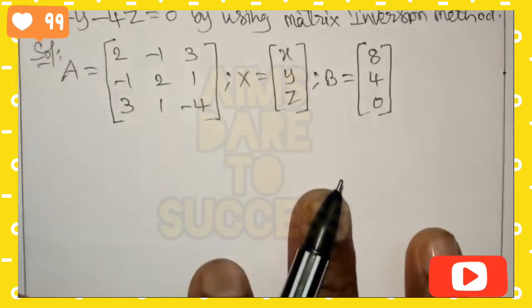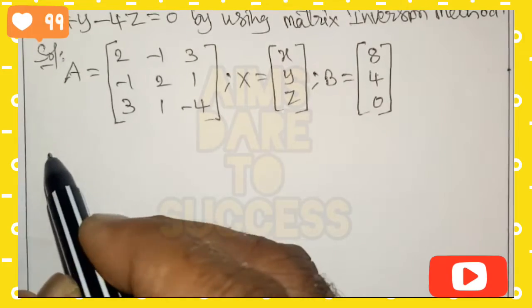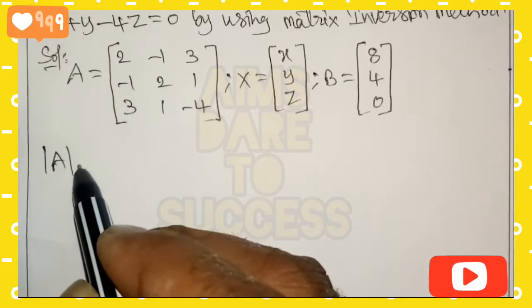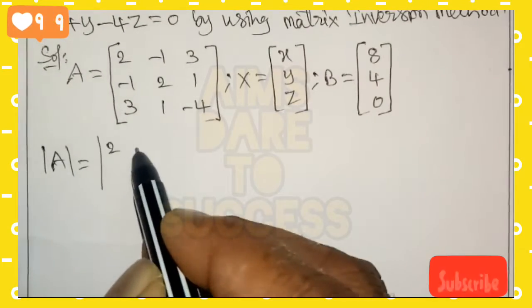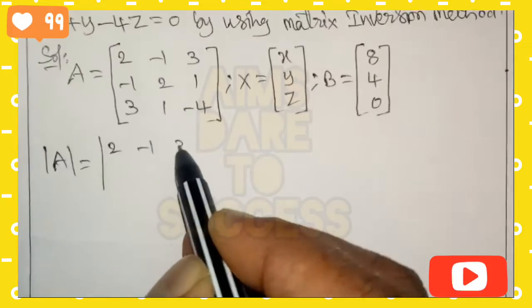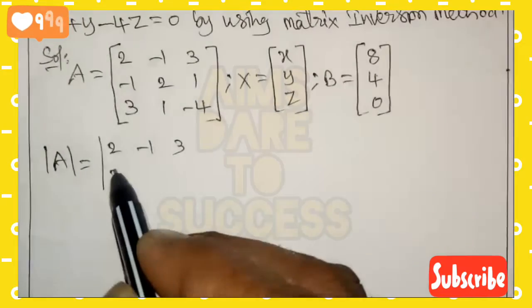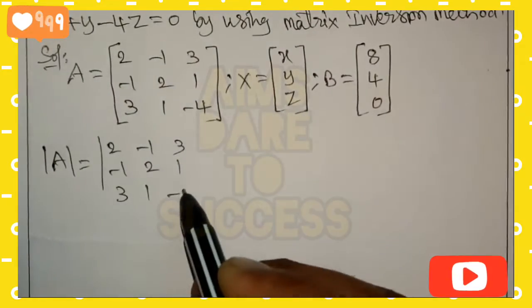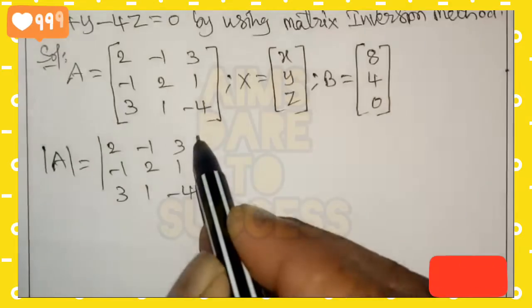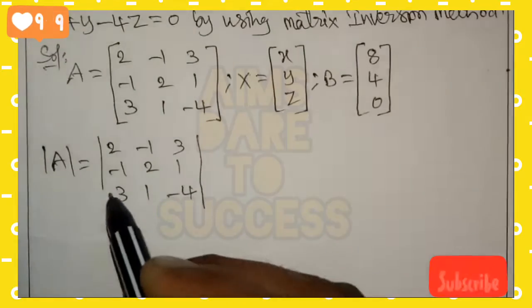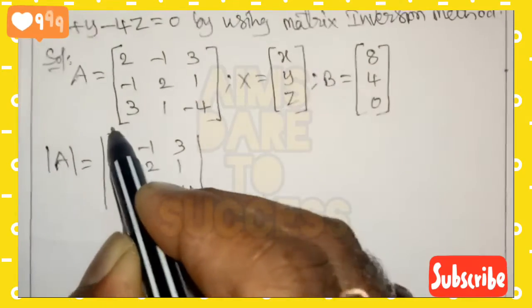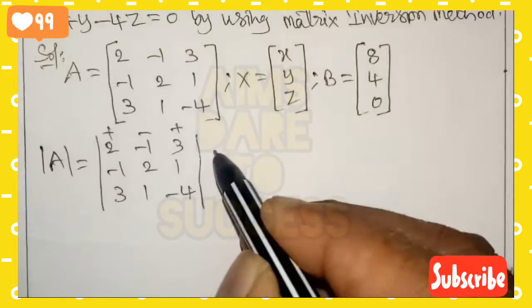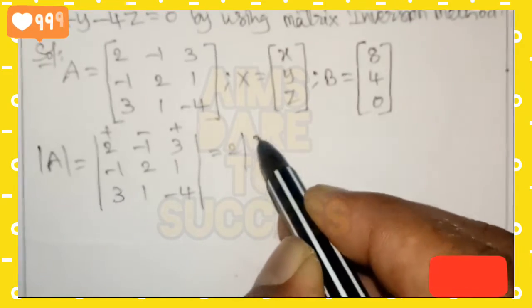After this, we find det(A). If det(A) equals 0, we cannot continue the matrix inversion method, so we need det(A) not equal to 0. So det(A) is the determinant of the matrix with rows [2, minus 1, 3], [minus 1, 2, 1], [3, 1, minus 4]. Above the first row we write plus, minus, plus signs.